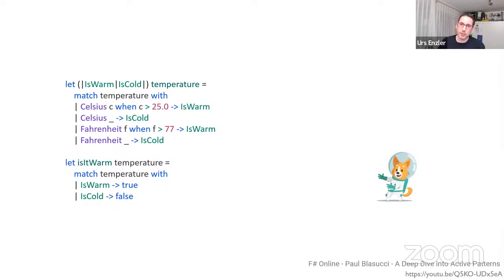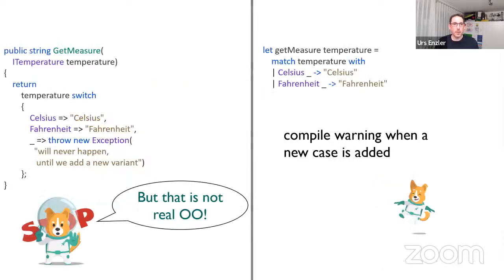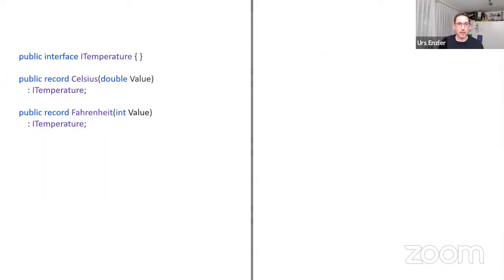There was a question in chat: 'What will F# match to if I query Kelvin?' With discriminated unions, you can't — temperature can only be Celsius or Fahrenheit. It's not possible to create a Kelvin value because only the types defined in the union can be used.